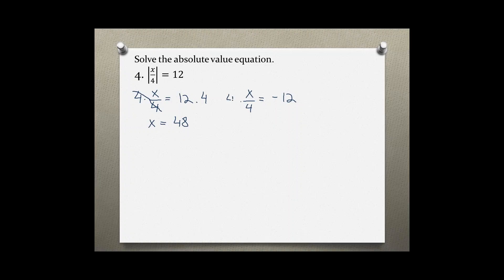Over here, the same thing — multiplying by 4 on both sides, which takes care of the 4 on the left side. So x is by itself, and negative 12 times 4 is negative 48.